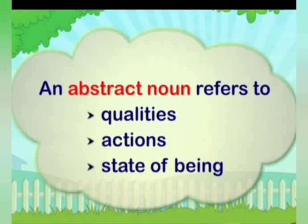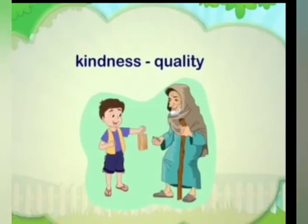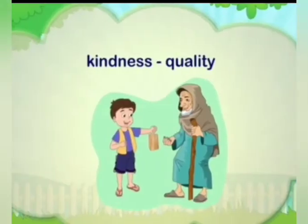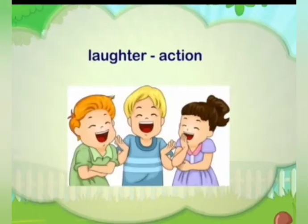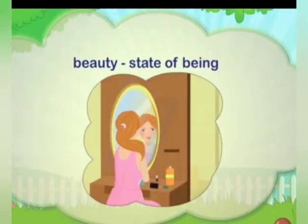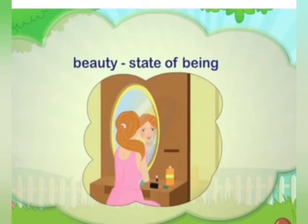Let's see some examples. Kindness is a quality — it shows a quality. Laughter is an action — action is going on, so we will call it an abstract noun. Then beauty is a state of being. How is that girl? She is a beautiful girl — this is a state of being. Abstract noun will say the quality, action and state of being, but we can feel it and we can't touch it. This is abstract noun, children.